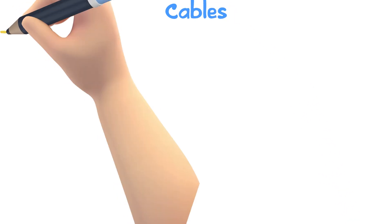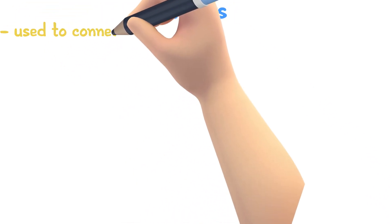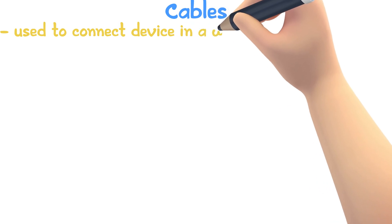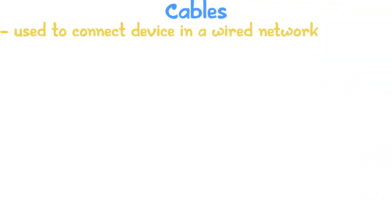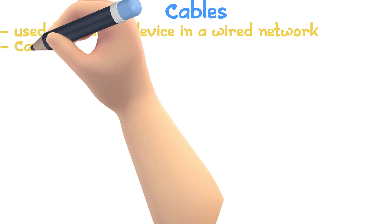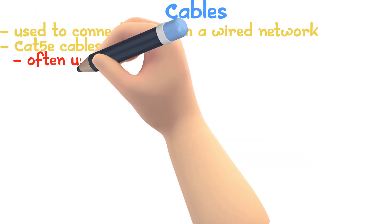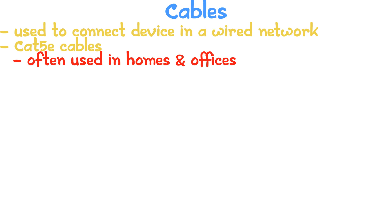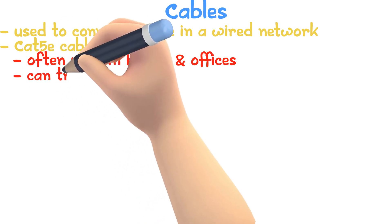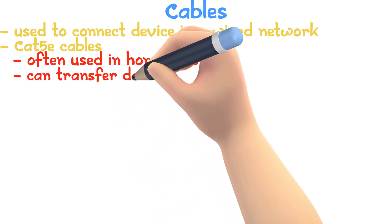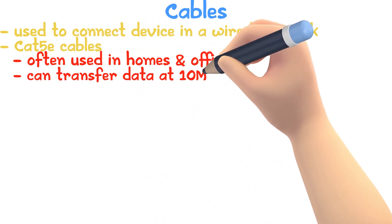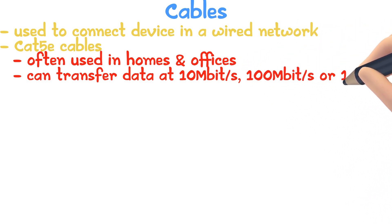Cables. A cable is used to connect devices in a wired network. There are three common types of cables. Cat5e cables are often used in homes and offices and can transfer data at a speed of 10 megabytes per second, 100 megabytes per second, or even 1 gigabyte per second.